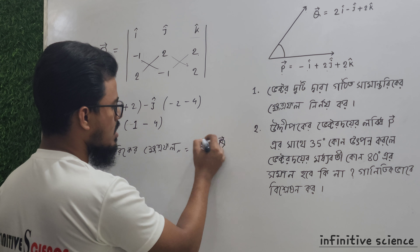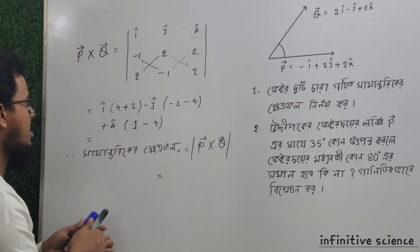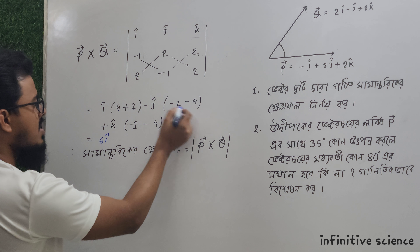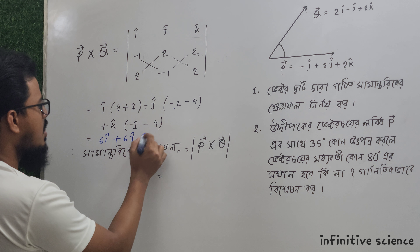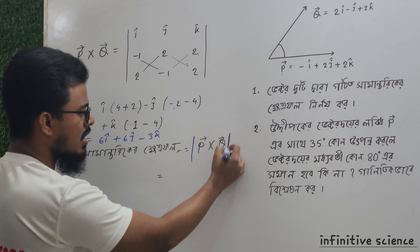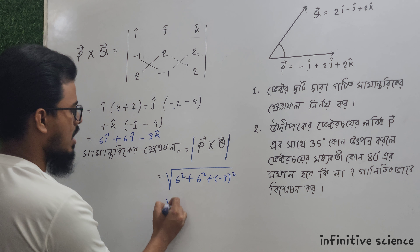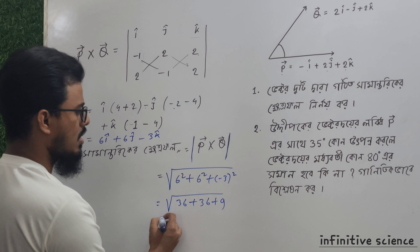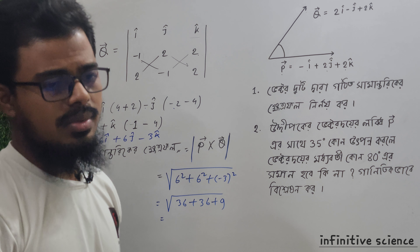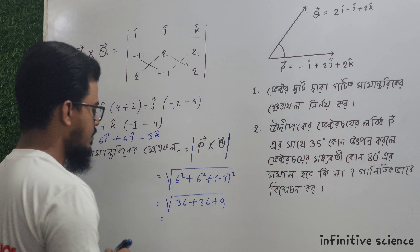This equals P cross Q modulus. Computing: we get components minus two, minus four, and minus six, plus six, then minus three. The modulus is root of six squared plus six squared plus minus three squared, which gives root of 36 plus 36 plus nine. So the calculation gives 36 plus 36 plus nine, and then root of 81.